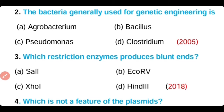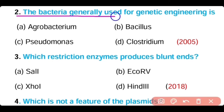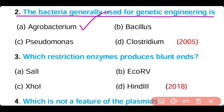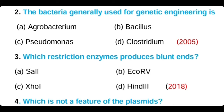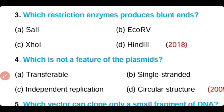Question 2: The bacteria that is generally used for genetic engineering is — Agrobacterium, Bacillus, Pseudomonas, Clostridium. Option A is correct. Agrobacterium tumefaciens is a soil pathogenic bacteria that is used for genetic engineering. It contains Ti plasmid.